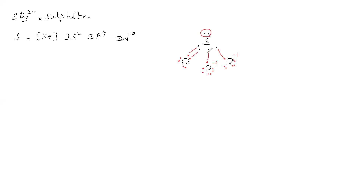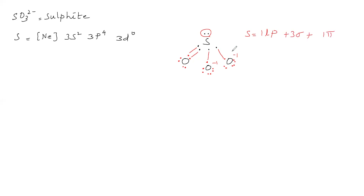In sulfite, sulfur's valency shell has 1 lone pair and 3 sigma bonds, plus 1 pi bond. Lone pair plus 3 sigma bonds totals 4, so sulfur must provide 4 hybrid orbitals. Therefore, 4 orbitals from the valency shell go for intermixing: one 3s orbital and three 3p orbitals.